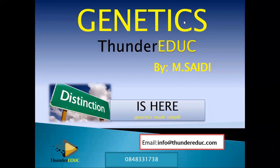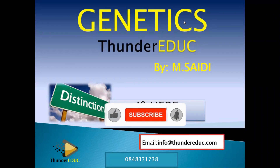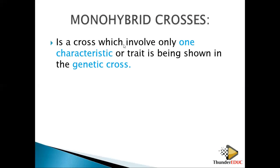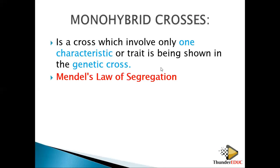Welcome back to our class. Don't forget to subscribe if it is your first time to visit our channel. A monohybrid cross involves only one characteristic or trait — the same trait shown in the genetic cross. Mendel put forward the law of segregation.